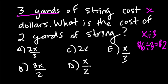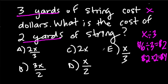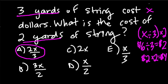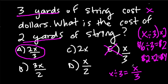Then I would double that, because 2 yards of string is double the cost of 1 yard. For example, if 1 yard was $2, I'd multiply by 2 and realize that 2 yards costs $4. These answers are represented in algebra. The first thing we did was take X, divide it by 3, then multiply by 2. X divided by 3 can be written as X over 3 — choice E — but E only shows us how to find 1 yard of string. We multiply by 2, and with fractions, 2 times X over 3 is the same as 2X over 3. So A is the answer.